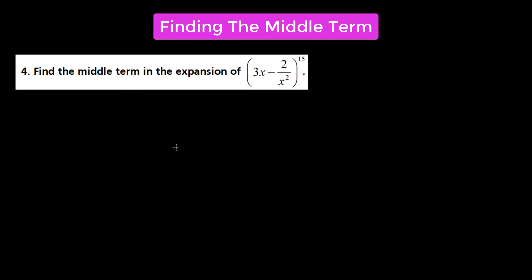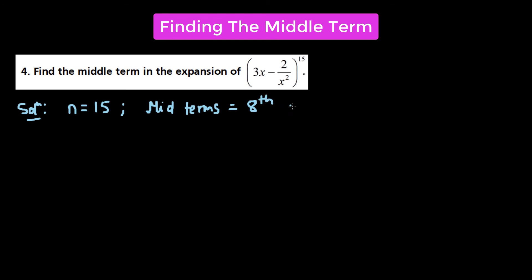Here we're given the binomial expression (3x − 2/x²) raised to the power of 15, and we have to find the middle terms. We have n = 15, which is again an odd number, so the middle terms will be at positions (15+1)/2 = 8 and 9. So the 8th term and the 9th term are the middle terms.